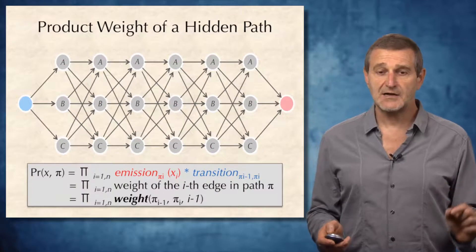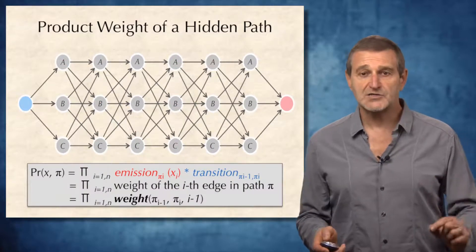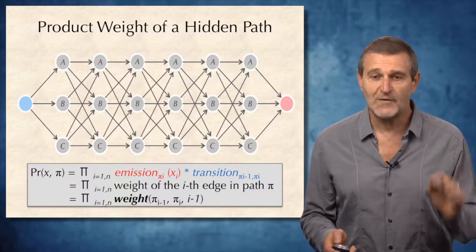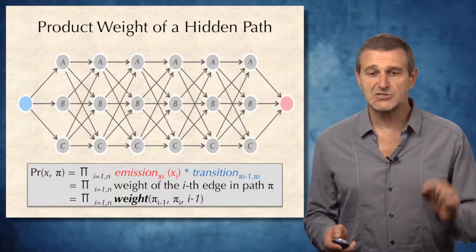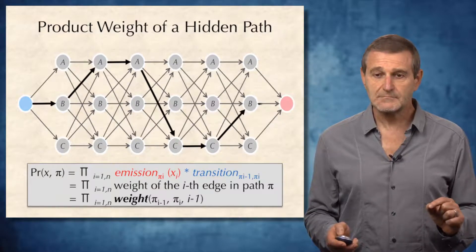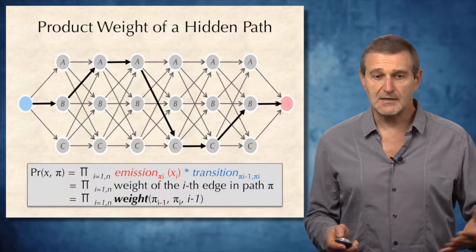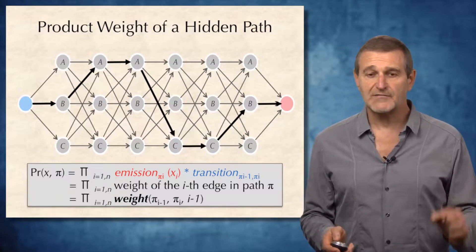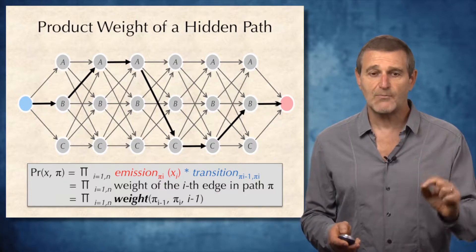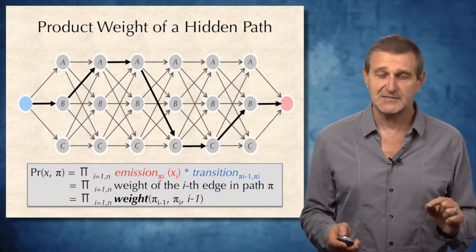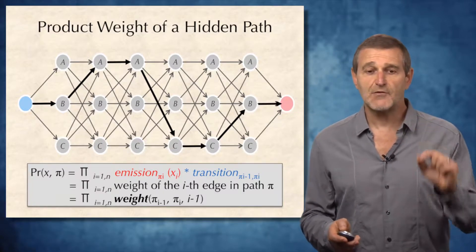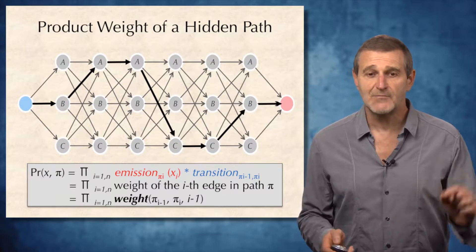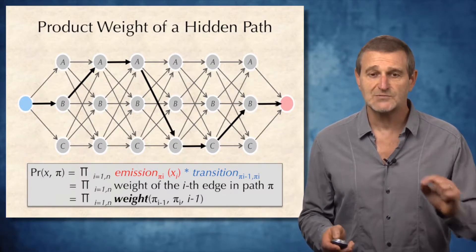Afterwards, we construct a graph in which the product weight of a hidden path is simply equal to the product of weights of individual edges, as shown on this slide. The product weight of a path will be simply equal to the probability of x and pi. Therefore, we constructed a graph in which the product weight of every path equals the probability of x and pi — exactly what we are interested in. Finding the hidden path pi that maximizes probability of x and pi is simply finding a path with maximum product weight.